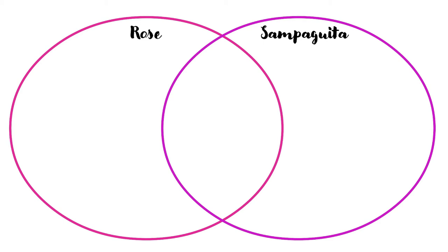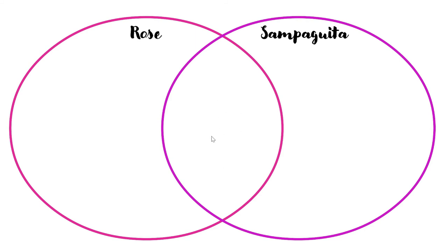From the story we read last week about Rose and Sampaguita — in the pink circle, can you write all the characteristics of Rose, one of the characters in the story? And then on this side, in the violet circle, can you write all the characteristics of Sampaguita, the other character in the story? And here in the middle, can we write their similarities — the similarities of Rose and Sampaguita?